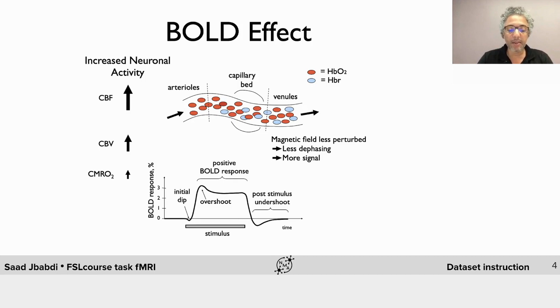It comes about through the BOLD effect which works in this way. An increase in neural activity triggers changes in the balance between red blood cells that have oxygen and those that don't. And that happens through changes in blood flow and blood volume, CBF and CBV.